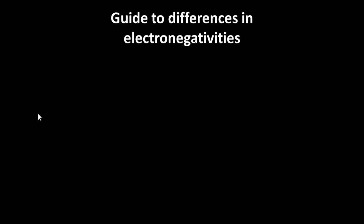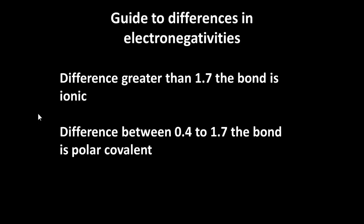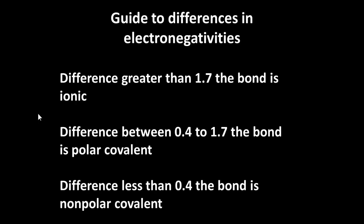Can we be any more precise over this? Well, we can be slightly more precise. If the difference is greater than 1.7, then we would expect the bond to be ionic. If the difference is between 0.4 and 1.7, then the bond is likely to be polar covalent. And if it's less than that, the bond is going to be non-polar covalent. Note that I'm only saying it's likely. There's no definitive boundary here between each of these.